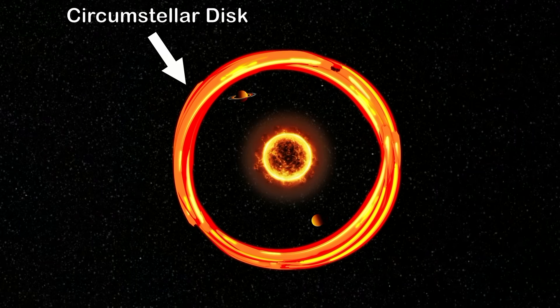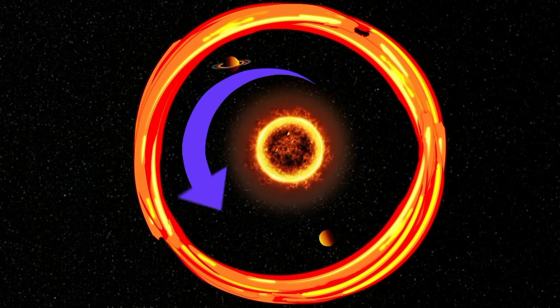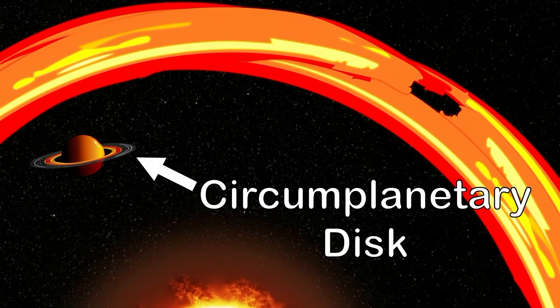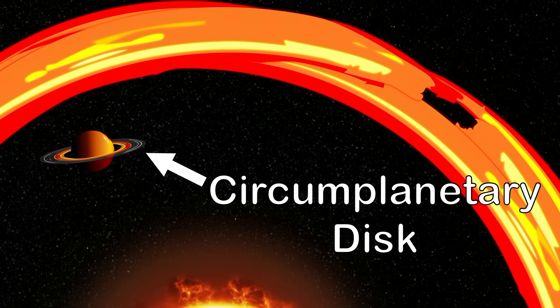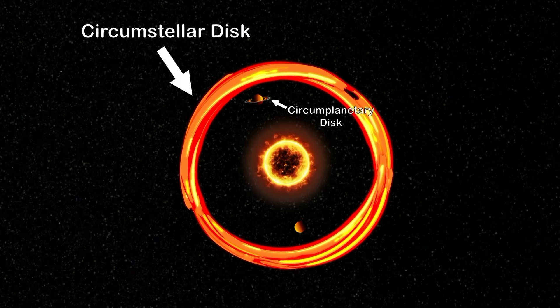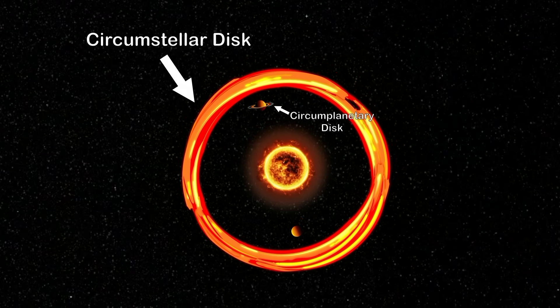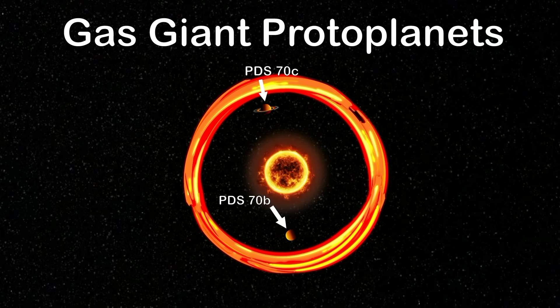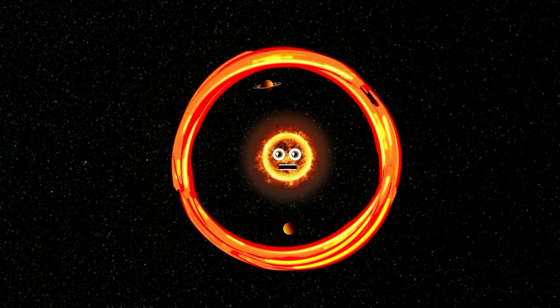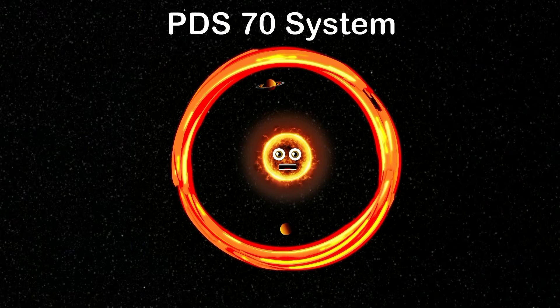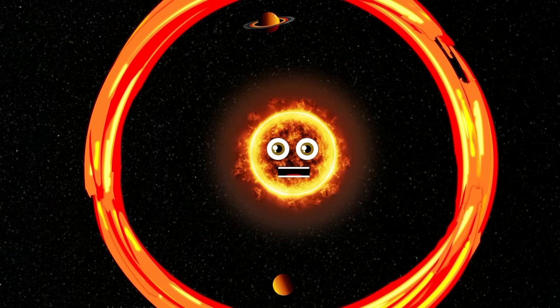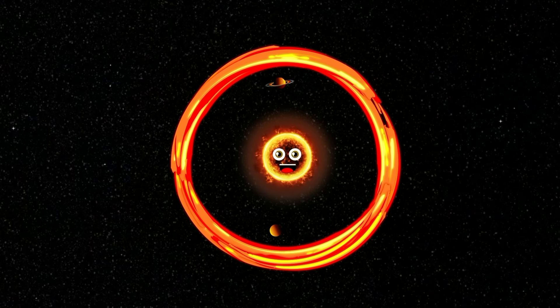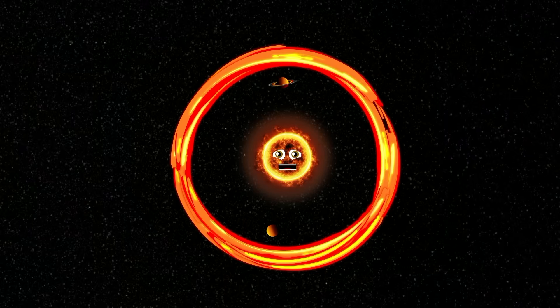My system has a circumstellar disk surrounding it with an inner cavity sculpted by the planets. PDS-70C has something surrounding it, a circumplanetary disk. Both the circumstellar and circumplanetary disk are possibly forming exomoons like Jupiter formed his. Both planets are young gas giant protoplanets. We can learn how planets formed by listening to scientists.